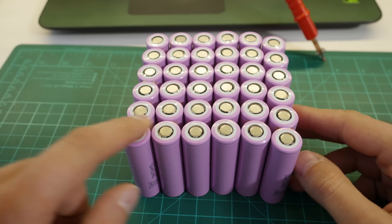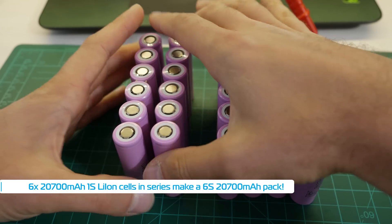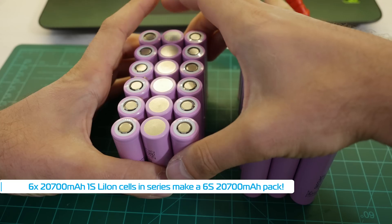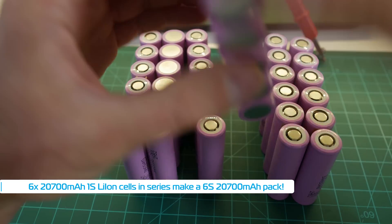After doing this for all cells I ended up with 6 large 6-piece cells each with a capacity of around 20,000 mAh which were ready to be assembled into series.